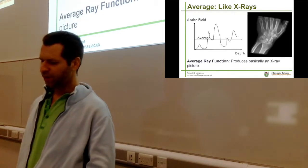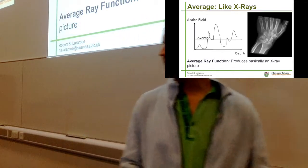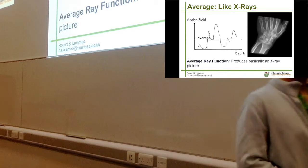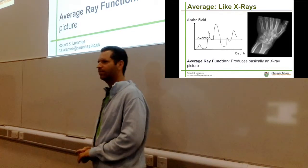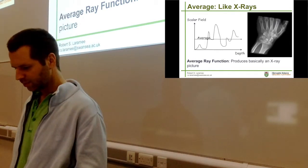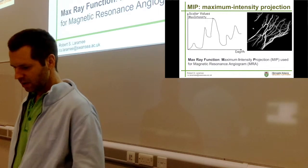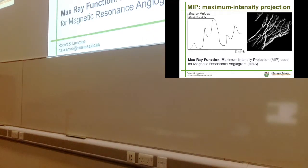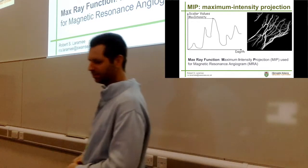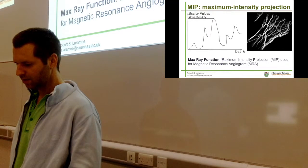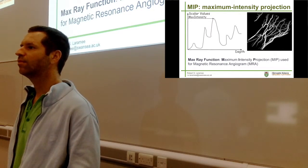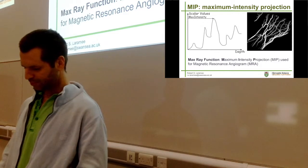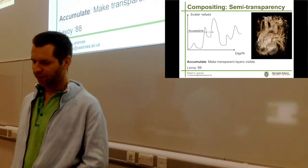This is what it looks like when we use average - the result looks like an x-ray, returning the average value of all the voxels that we sample. This is an example of returning the highest intensity value encountered along each ray in the volume. Nick - the veins in your hand. That's right. Very good.